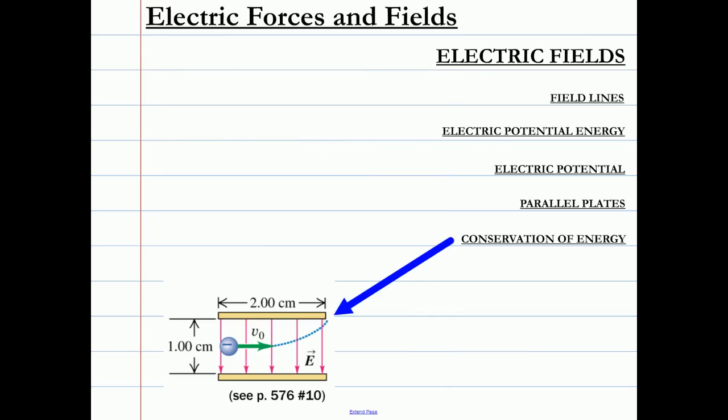You may see conservation of energy questions come up like the one on the left here. This question is almost exactly like a projectile motion problem, where the electron drops from a region of higher potential energy to a region of lower potential energy. Remember to keep the x and y information separate. There is only acceleration in the y direction, none in the x.